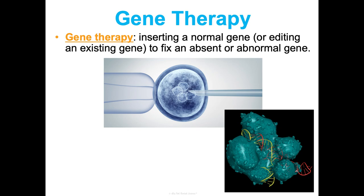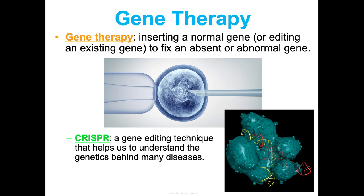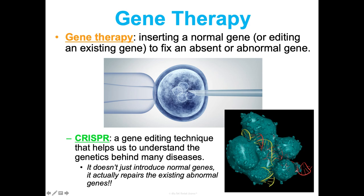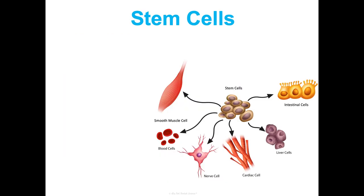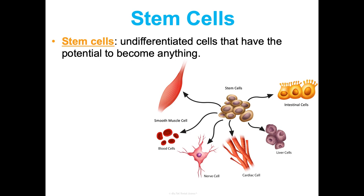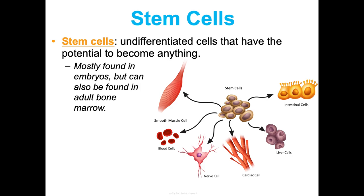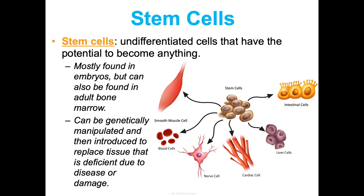Gene therapy is the idea of inserting a normal gene or editing an existing gene to fix an absent or abnormal gene. CRISPR is a gene editing technique that helps us understand the genetics behind many diseases — it doesn't just introduce normal genes, it actually goes in and repairs existing abnormal genes, which is pretty awesome. Stem cells are undifferentiated cells that have the potential to become anything at all. Found mainly in embryos but also in adult bone marrow, they're important for genetic engineering because we can genetically manipulate them and introduce them to replace tissue that's deficient or damaged due to disease.